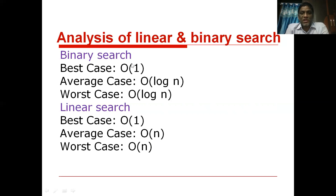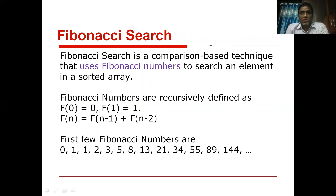For binary search, if the element is present exactly at the middle, the best case time complexity is O(1). In the remaining two cases the time complexity is O(log n).